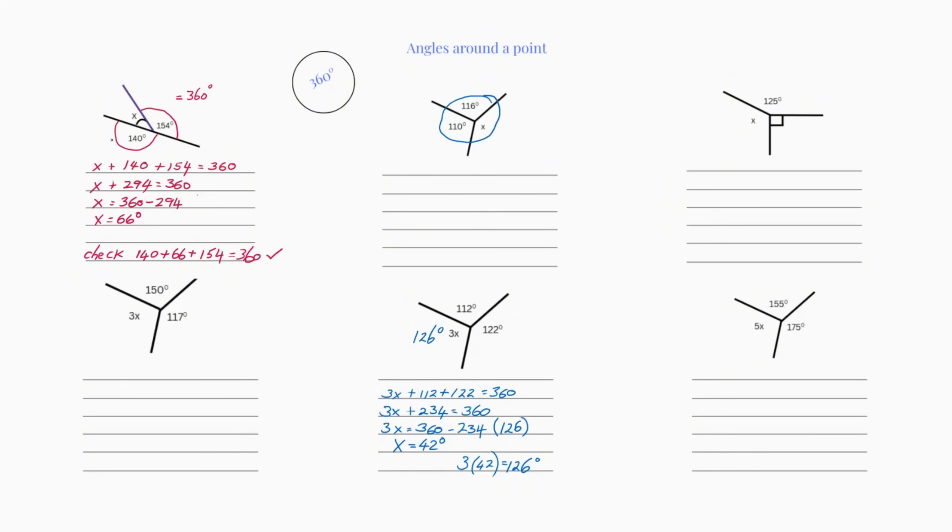For this first one, you have to find x. We need to find out what the unknown is, our x. It's given us 140 and 154. All we do is use a little bit of algebra. We're doing x plus 140 plus 154 equals 360, which is 294 equals 360.